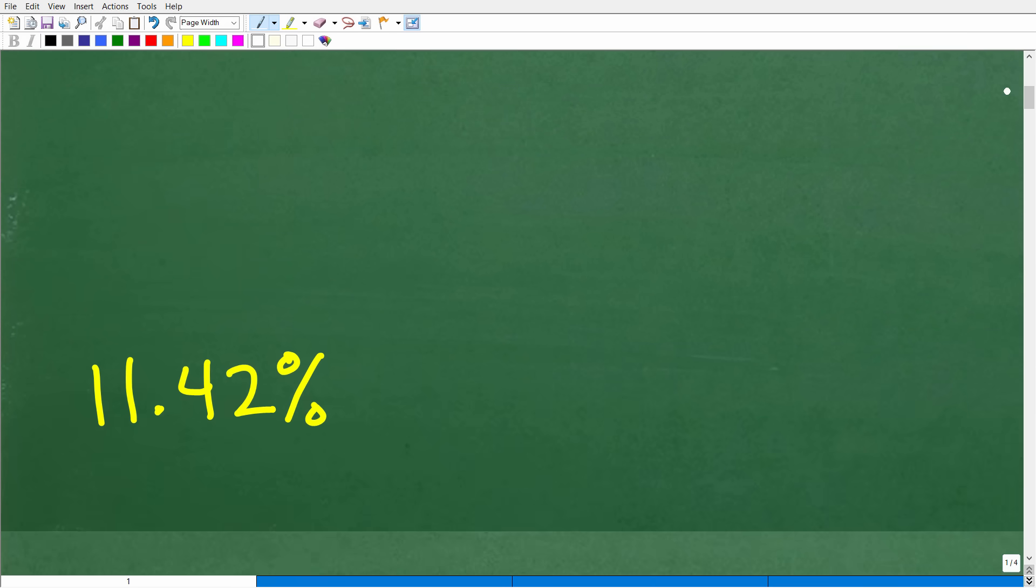The correct answer is about 11.42%. That is the simple annual interest rate you would need to grow your $7,000 into $7,800.